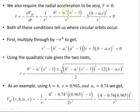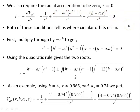We also require the radial acceleration to be zero for circular motion: R-double-dot equals zero. Now R-double-dot is minus dV_eff/dR, where V_eff is the effective potential differentiated with respect to the radial coordinate. We end up with this result and set it to zero, producing a new equation. Both of these conditions tell us where circular orbits occur. We can now solve for the radial coordinate R, but first we multiply through by minus R to the power of 4 to produce this quadratic-looking expression.